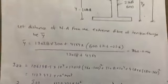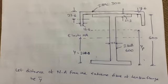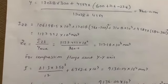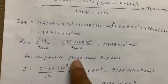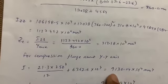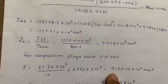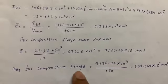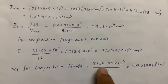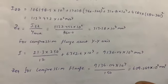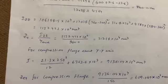Continuing the compression flange calculation using bd³/12, the moment of inertia for the compression flange about the YY axis is obtained. Then ZD for the compression flange is also calculated.